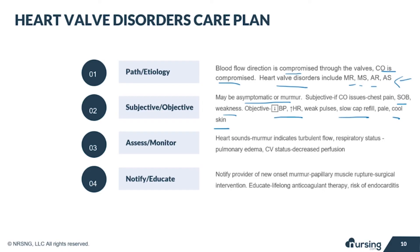Assess heart sounds for murmurs, respiratory status for signs of pulmonary edema, and cardiovascular status to assess for decreased perfusion. Notify the provider of new onset murmurs, as this could indicate an issue like a papillary muscle rupture, which requires surgical intervention. Educate valve replacement patients on the lifelong anticoagulant therapy need and the prevention of endocarditis.